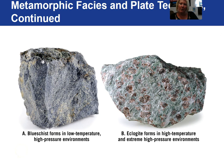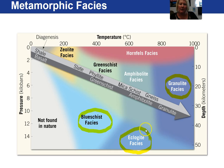Here are a couple of examples of metamorphic rocks. Blue schist forms in low temperature, high pressure environments. Eclogite forms in high temperature and extreme high pressure environments. Both of these represent a subduction zone regime.